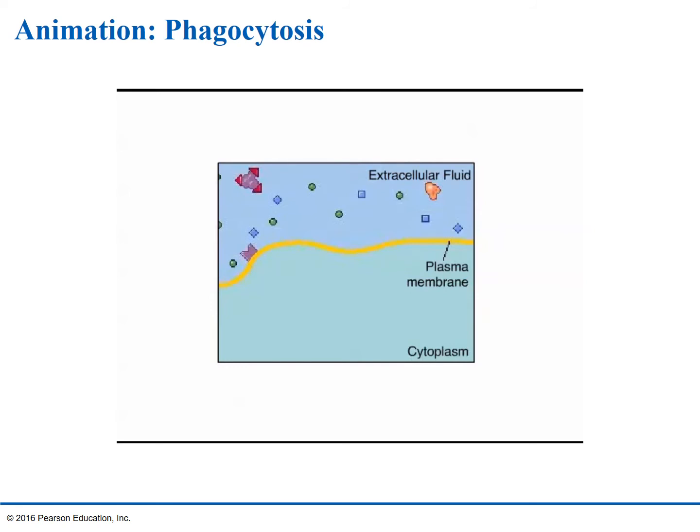Phagocytosis occurs in specialized cells called phagocytes, which include macrophages, neutrophils, and other white blood cells. Invagination produces a vacuole, which usually fuses with one or more lysosomes containing hydrolytic enzymes. Materials in the vacuole are broken down by these enzymes and degraded.